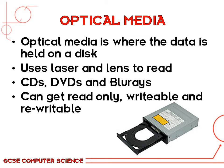You can get three different types of each disk: read-only, writable, and re-writable. Read-only means that once the data is on the disk, it cannot be altered in any way. Writable is usually a blank disk that allows you to burn files onto it. Re-writable allows you to erase the data and add more data on.